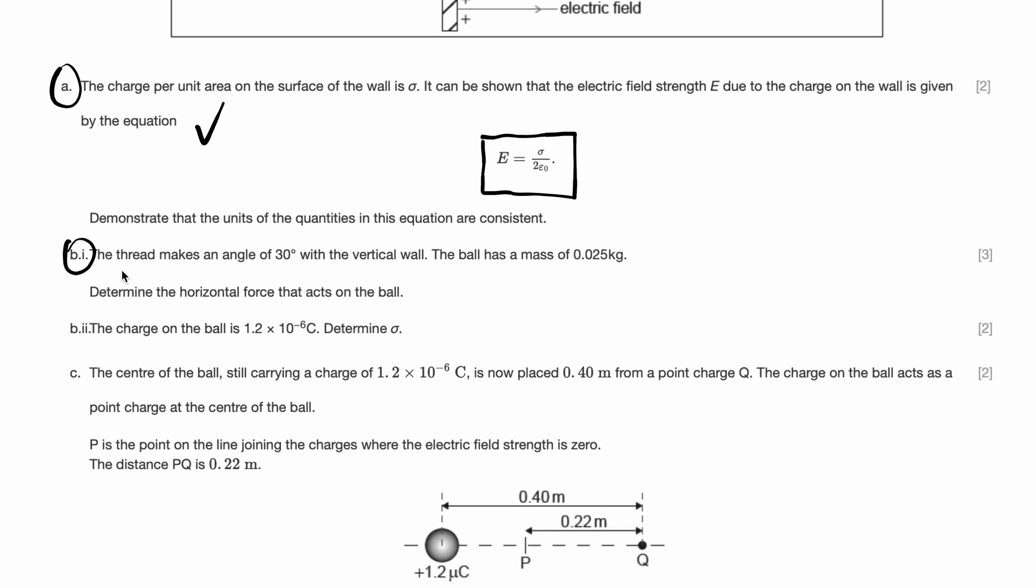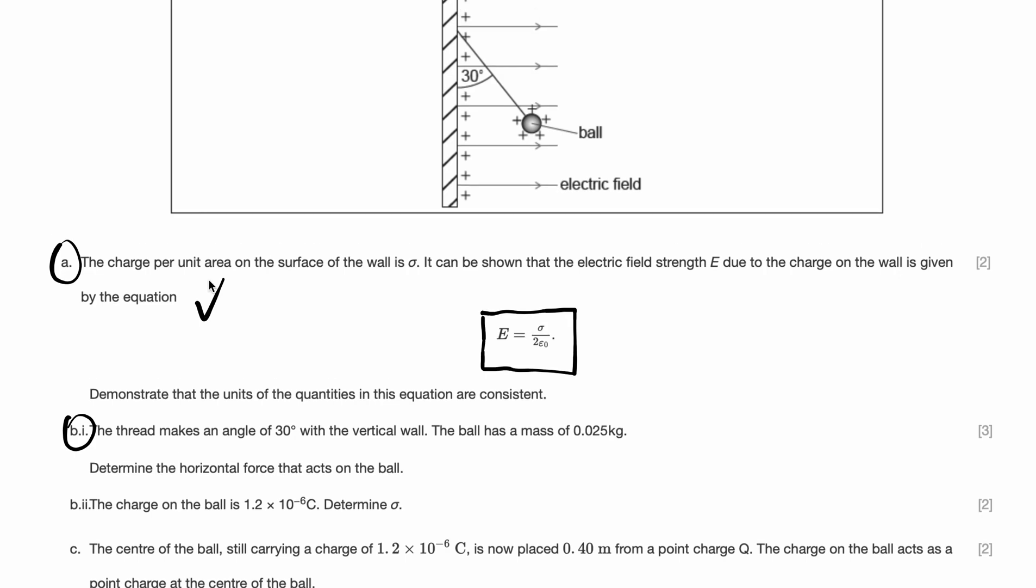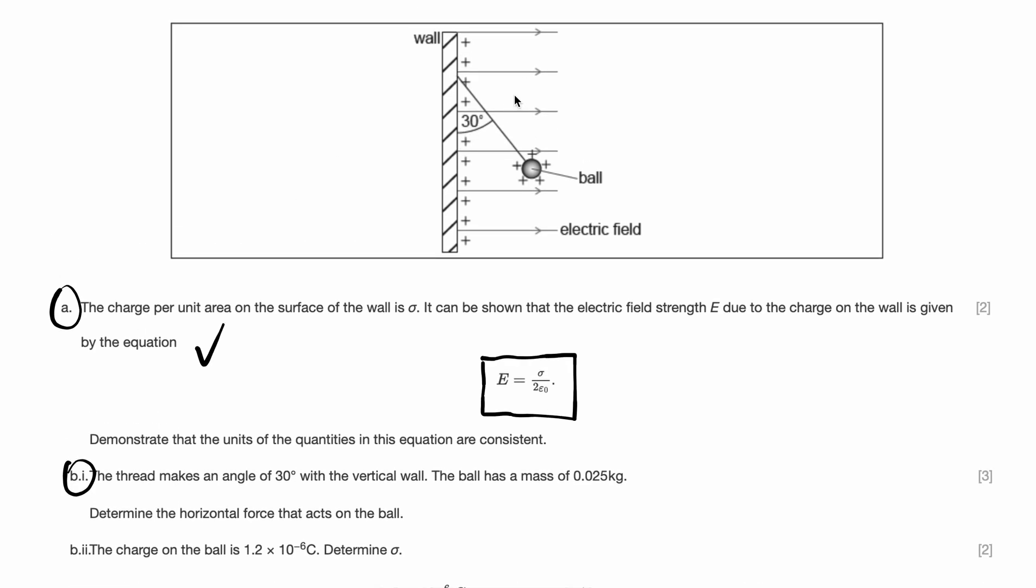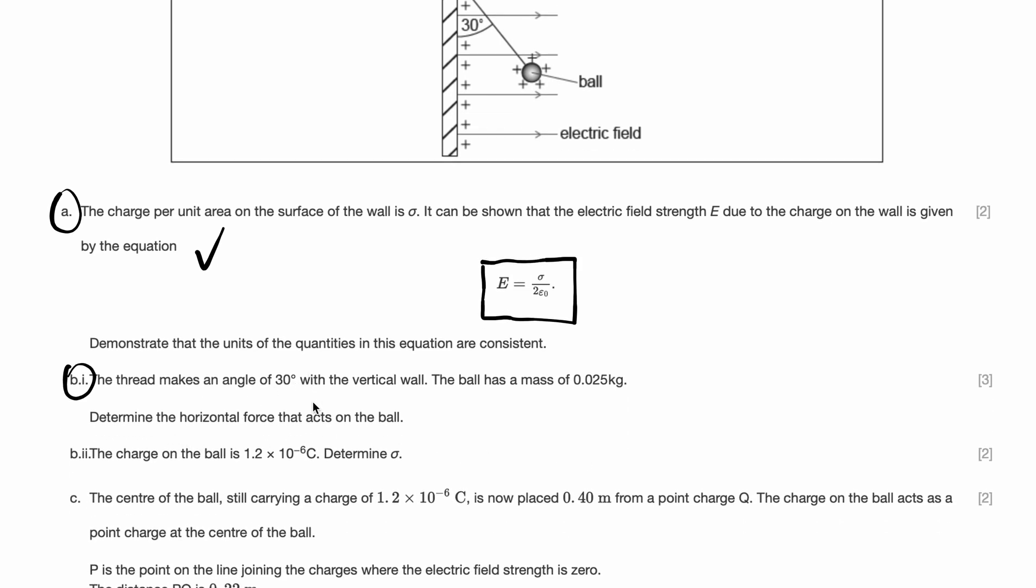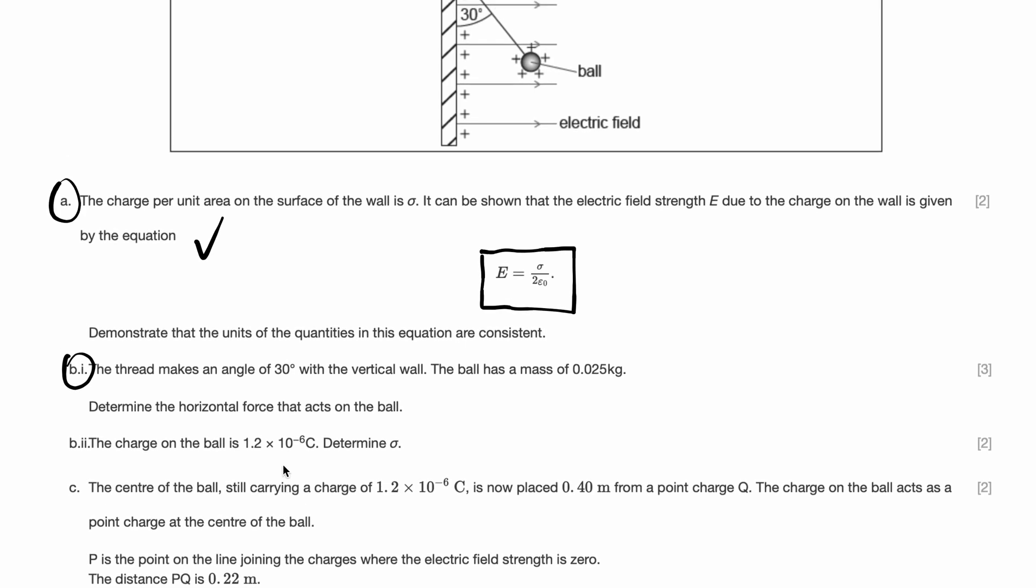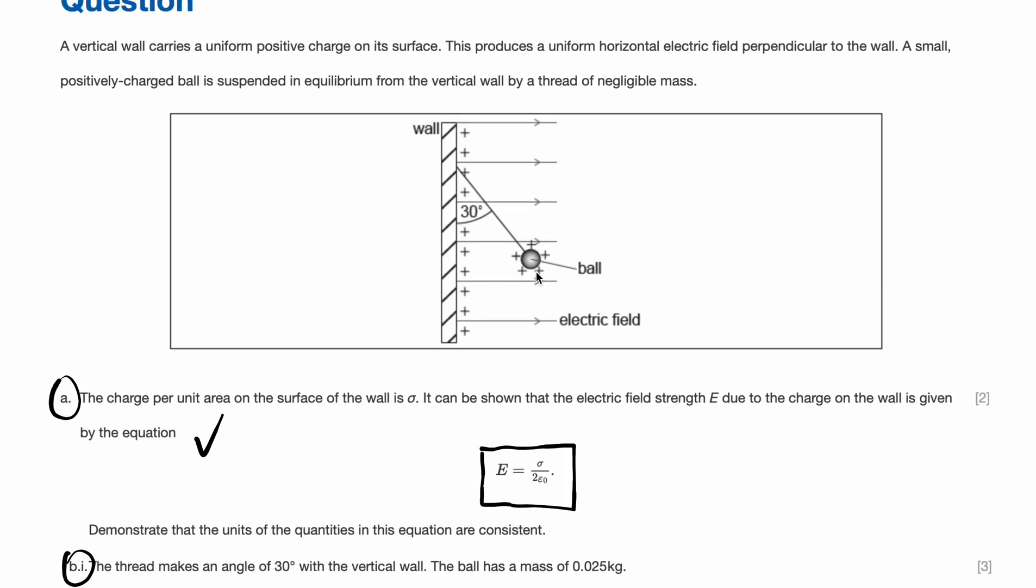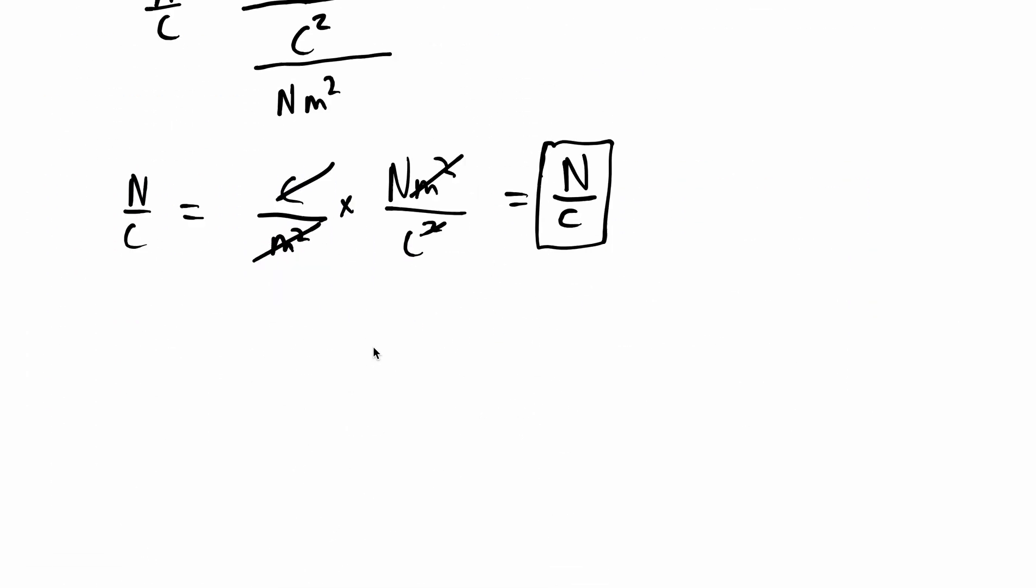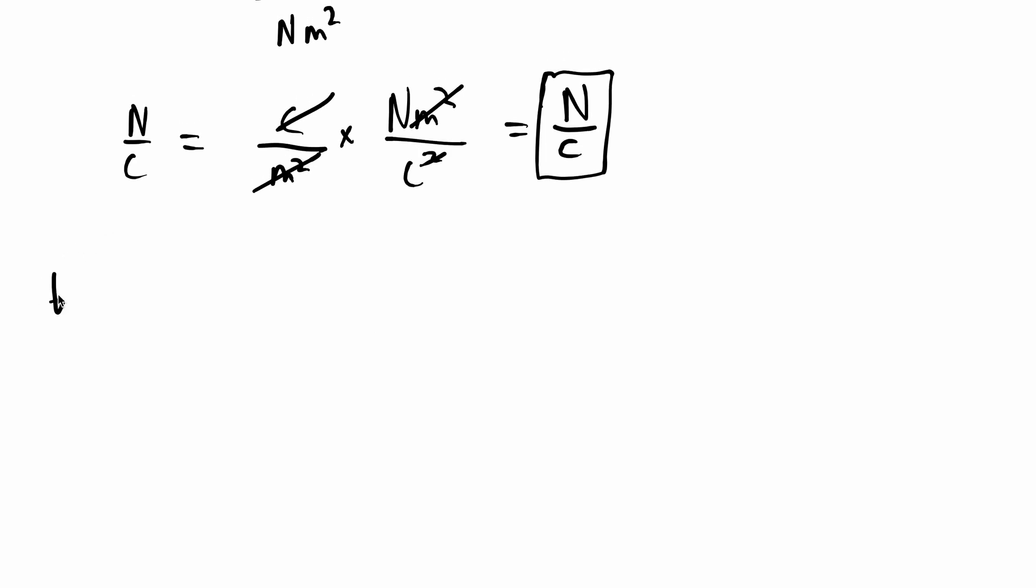That's part A done. We have just proven that the units are consistent. Part B. The thread makes an angle of 30 degrees with a vertical wall. We need to use our diagram. The mass of the ball is 0.025 kilogram. Determine the horizontal force that acts on the ball. Let's solve it using this diagram. So let's just redraw the diagram down here.